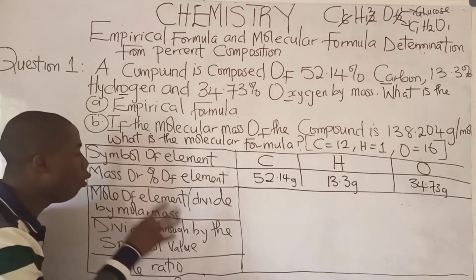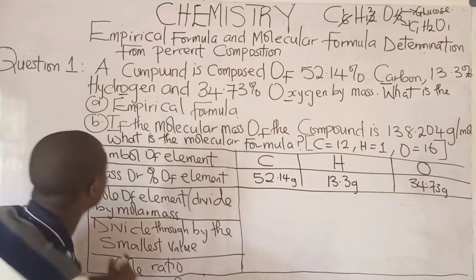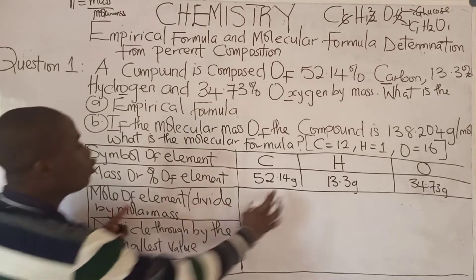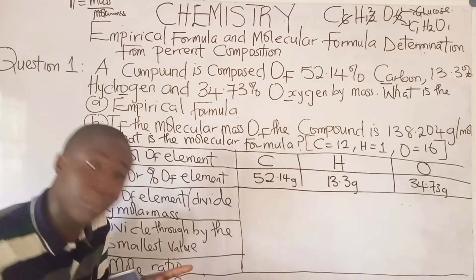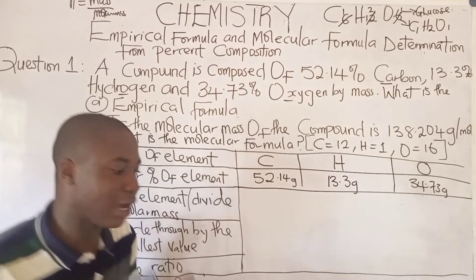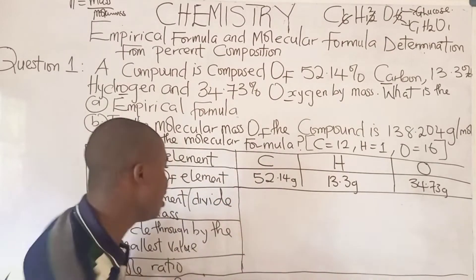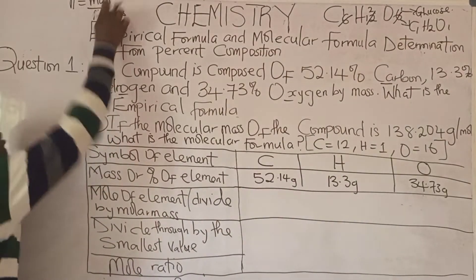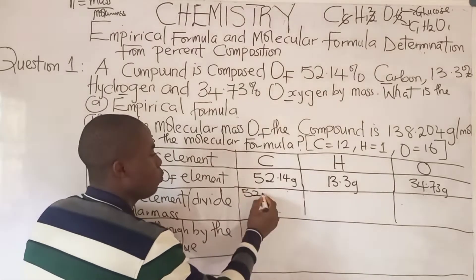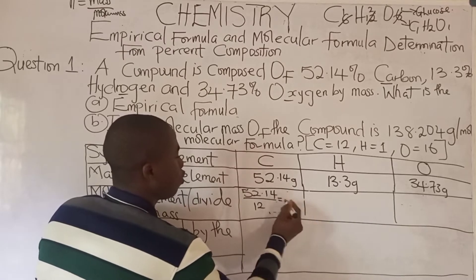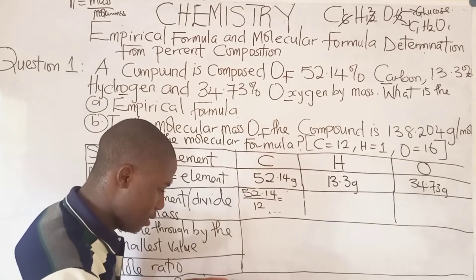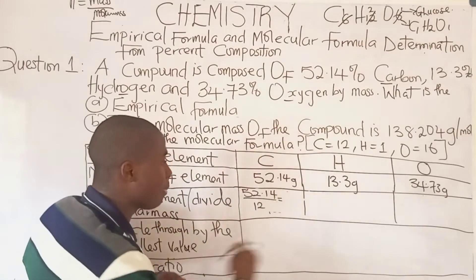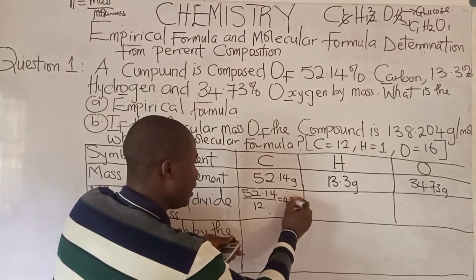From this part of the table it says moles of elements, meaning we divide by the molar mass of these elements. Calculating number of moles is simply mass over molar mass. So for carbon: 52.14 over 12 equals 4.345 moles. Don't approximate here — just write all the values.